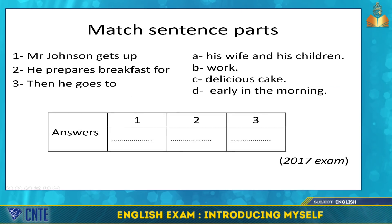For the third task, you have to match sentence parts to make sentences. On the left: number one, Mr. Johnson gets up; number two, he prepares breakfast for; number three, then he goes to. On the right: A, his wife and his children; B, work; C, delicious cake; D, early in the morning. Sentence part one matches with D, sentence part two matches with A, sentence part three matches with B. C is the extra one.